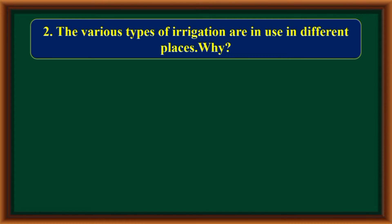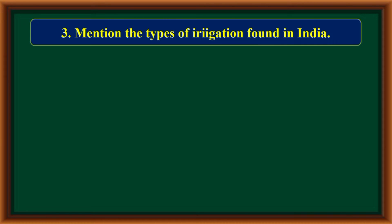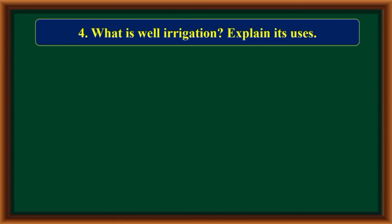Various types of irrigation are in use in different places. The reasons include water requirements for agriculture, distribution of rainfall, physical features, types of crops, and types of agricultural methods used. The types of irrigation found in India are well irrigation, canal irrigation, and tank irrigation.